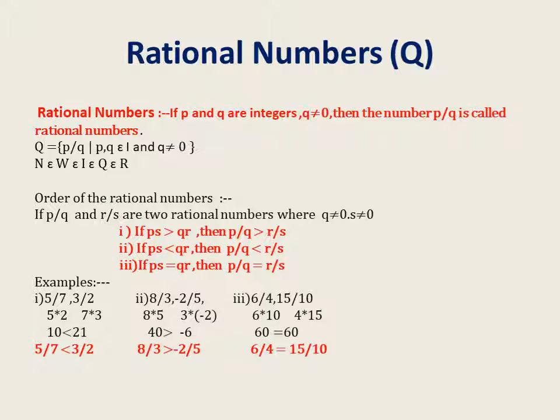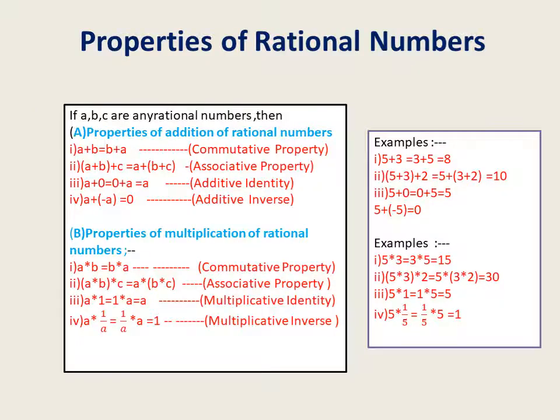Third example: compare 6/4 and 15/10. Cross multiply: 6×10 = 60 and 4×15 = 60. Both products are equal, therefore 6/4 = 15/10. When comparing any two fractions, the first may be smaller, greater, or equal to the second — this type of relation is known as the order relation.